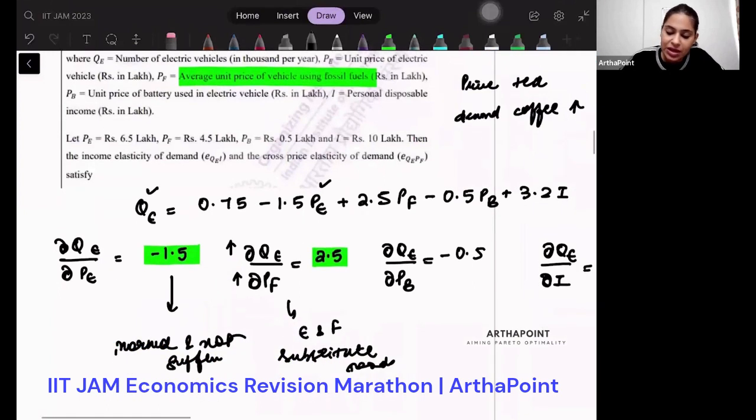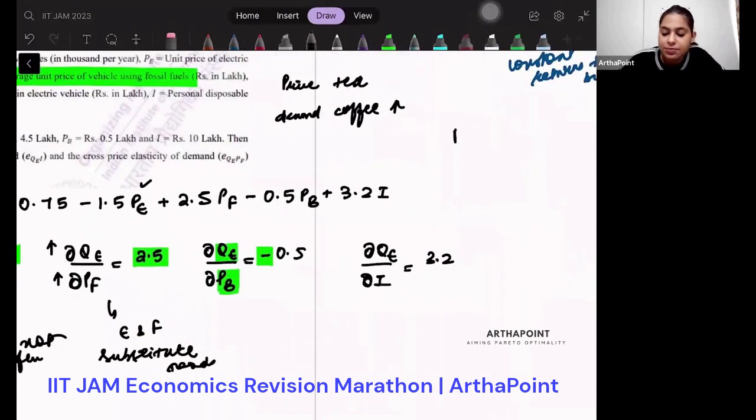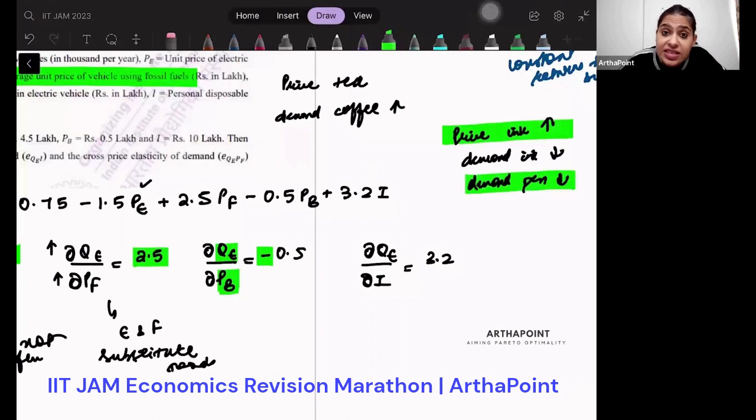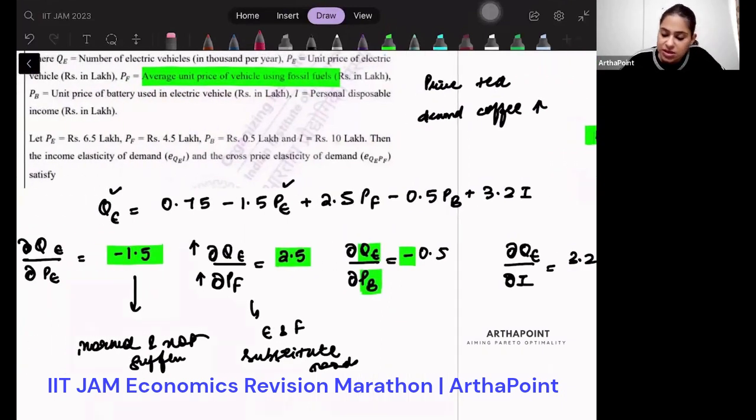Then come to the next one. This is a negative sign. So when PB increases, QE decreases. Again, let's think about this. When price of ink increases, demand for ink decreases. Ink is used in pen, so demand of pen also decreases. So the relationship between this and this is coming negative. Then they are complementary goods. That means here, if the cross price elasticity or cross price effect is negative, they must be complementary goods.